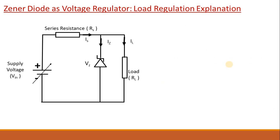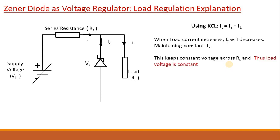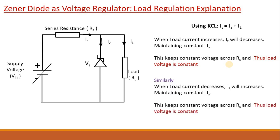Similarly, we can explain load regulation. Suppose by any means load current increases. Then for an amount of increase in load current there will be the same amount of decrease in IZ, which maintains constant IS. This constant IS keeps the RS voltage constant. As the input voltage has not changed, the load voltage will remain constant. Similarly, if load current decreases, IZ will increase, which maintains constant IS. As a result the voltage drop across RS will be constant, and hence the voltage drop across the load will be constant.